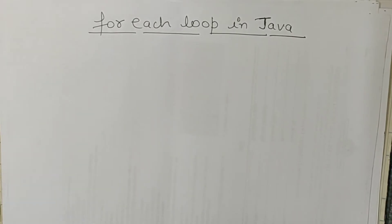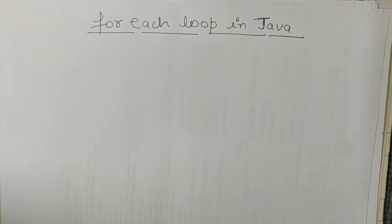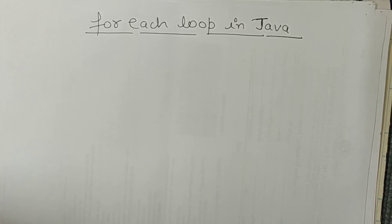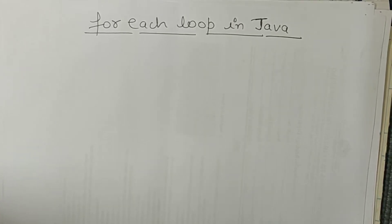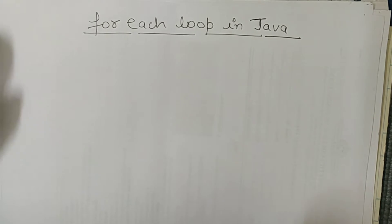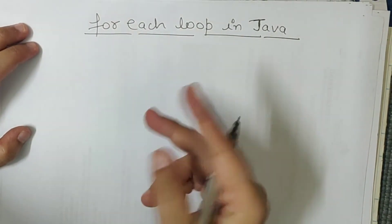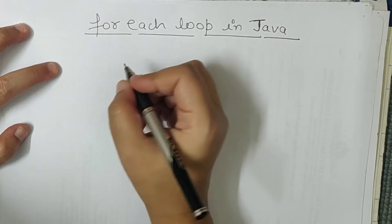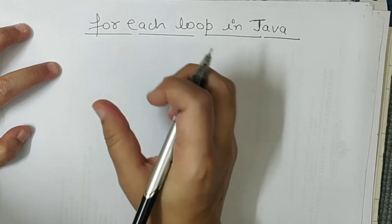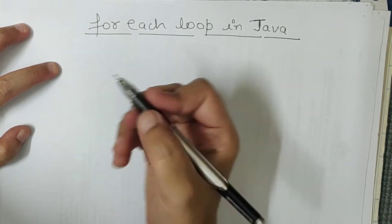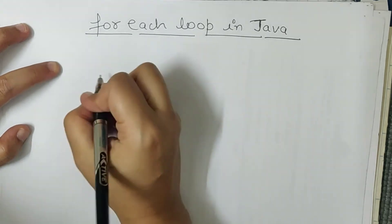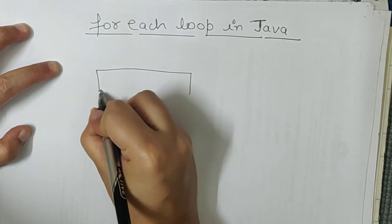Hello everyone, the next topic in Java programming tutorial is for-each loop in Java. Aapne for loop ka naam to suna hoga, but this is different from for loop. For-each loop aur for loop mein difference kya hai, pehle woh bata deti hoon. Basically hum loops ko use karte hain, aur for-each loop hum iteration purpose ke liye use karte hain.